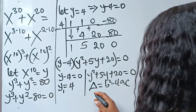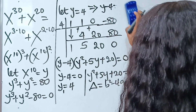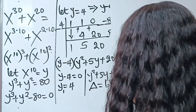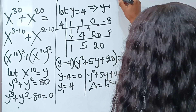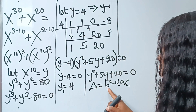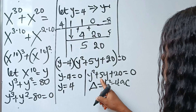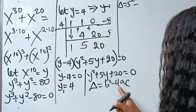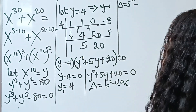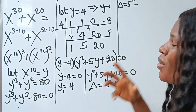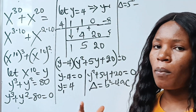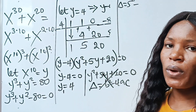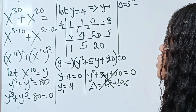To check, we use the discriminant: b squared minus 4ac. Here b is the coefficient of y, which is 5. So the discriminant is 5 squared minus 4 times 1 times 20: that is 25 minus 80, which is negative. A negative discriminant means complex roots, so we will not use this quadratic. We focus on the real root y equals 4.